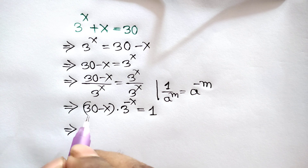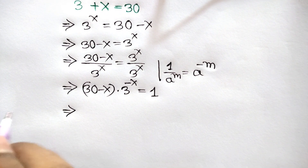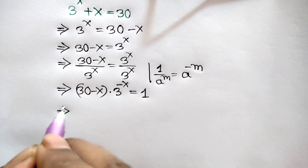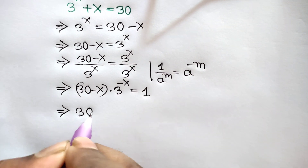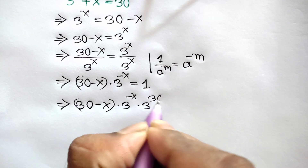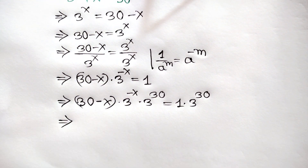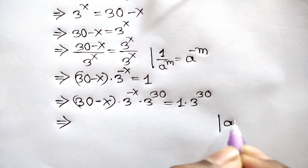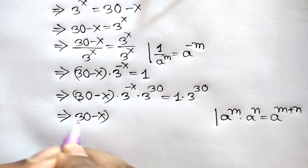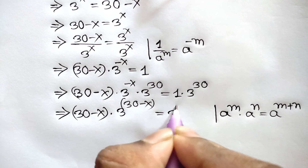Now, if we try to make the coefficient and the power equal, we multiply both sides by 3 to the power 30. So, 30 minus x times 3 to the power negative x times 3 to the power 30 is equal to 1 times 3 to the power 30. Using the rule that a to the power m times a to the power n is equal to a to the power m plus n, we get 30 minus x times 3 to the power 30 minus x is equal to 3 to the power 30.